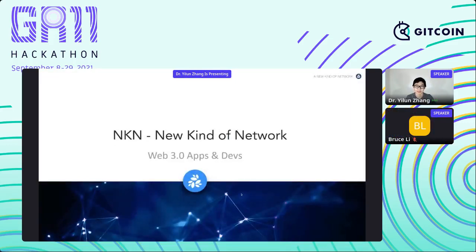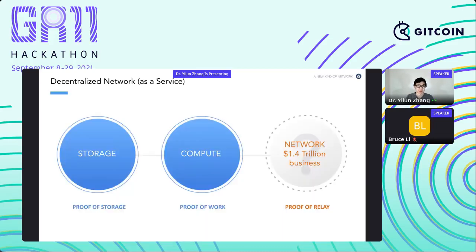Okay Bruce, can you see my presentation screen? Yes, okay. So let's get started. In short, what NKN does is provide a decentralized network for any centralized or decentralized application. If you think of other blockchain projects, some provide decentralized storage like Filecoin, some provide decentralized compute. Similarly, NKN provides decentralized networking through proof of relay — nodes in the network relay data for clients and earn mining rewards, enabling users to transmit data point to point, sometimes without any charge.